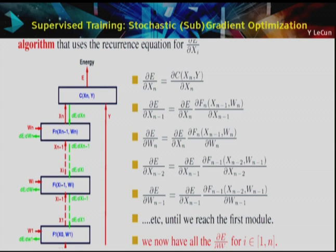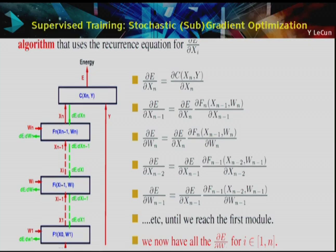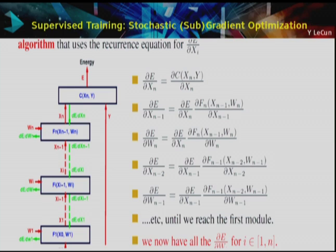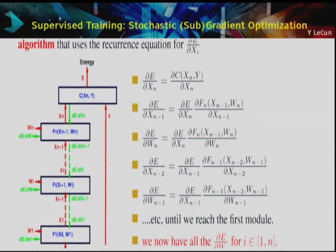Training uses the old idea of stochastic gradient descent. The trick is computing the gradient, done by the backpropagation algorithm — essentially a practical application of the chain rule. You compute the distance between the answer you want and the answer you get, then backpropagate signals to compute the gradient of this cost with respect to every parameter in the system.